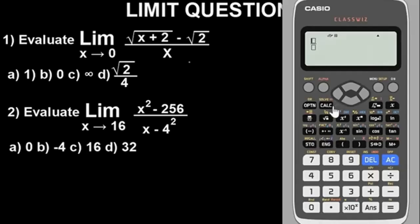We're good to go. Let's input the question. We have X squared (Alpha X squared) minus 256, all over X (Alpha X) minus 4 squared. Let's press equal and see what we have as our answer.